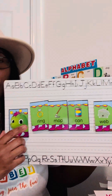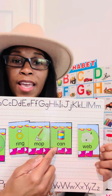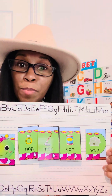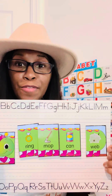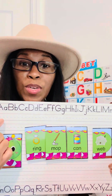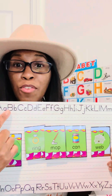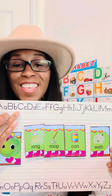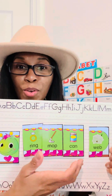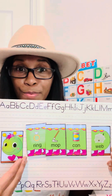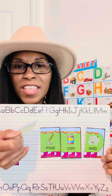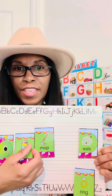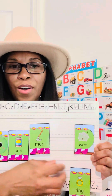So we have the word ring, mop, can, and web. Are these words in order? No. Can you help me put them in order? What would be the first word if you're going by the alphabet? We don't have a word that starts with A. Do we have a word that starts with B? No. C? Yes — can. So would that be our first word? Yes, you are right. So we're going to move it over and put can first.